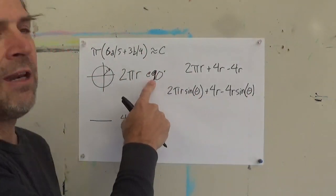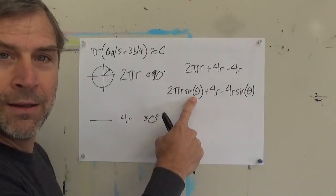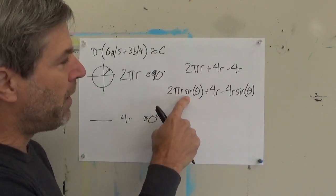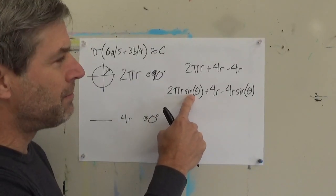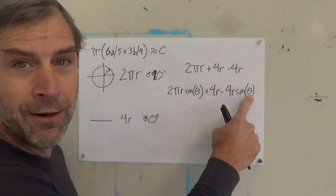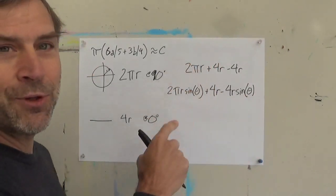Now, when I'm at 90 degrees, sine theta is 1. So I have 2 pi r times 1 plus 4 r minus 4 r. So I still have my formula for the circle.